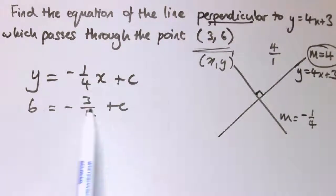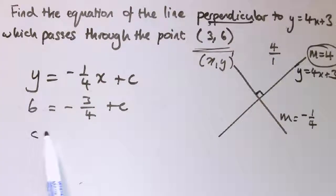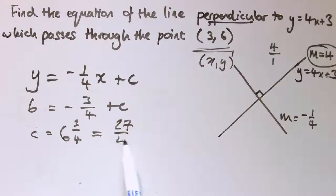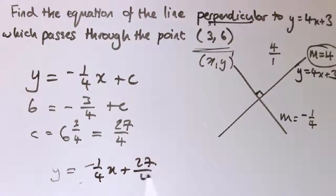So I've got 6 equals minus 3/4 plus c, because that's minus 1/4 times 3. So add 3/4 to both sides and I get c is 6 and 3/4, which I would write here as 27 over 4.